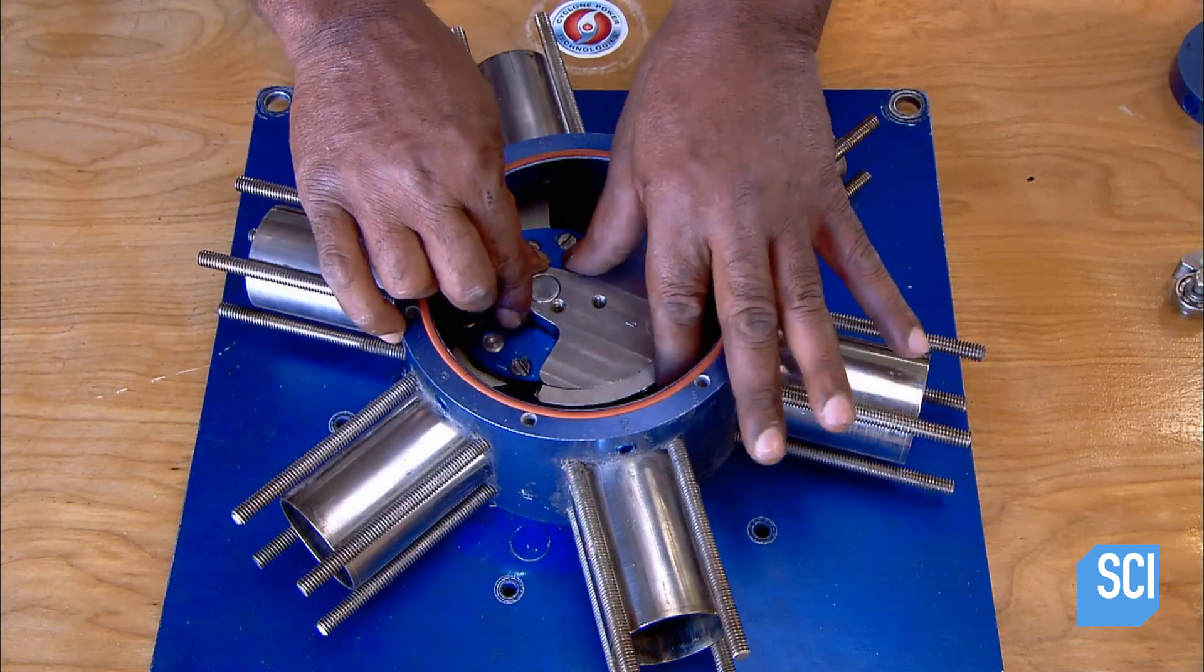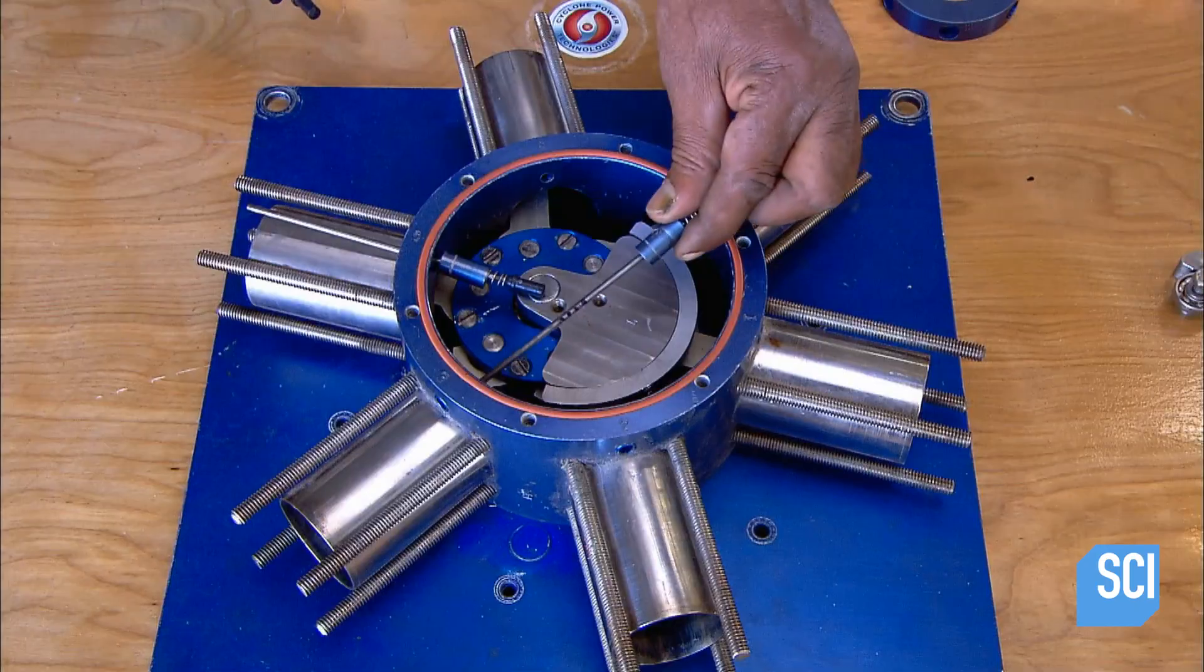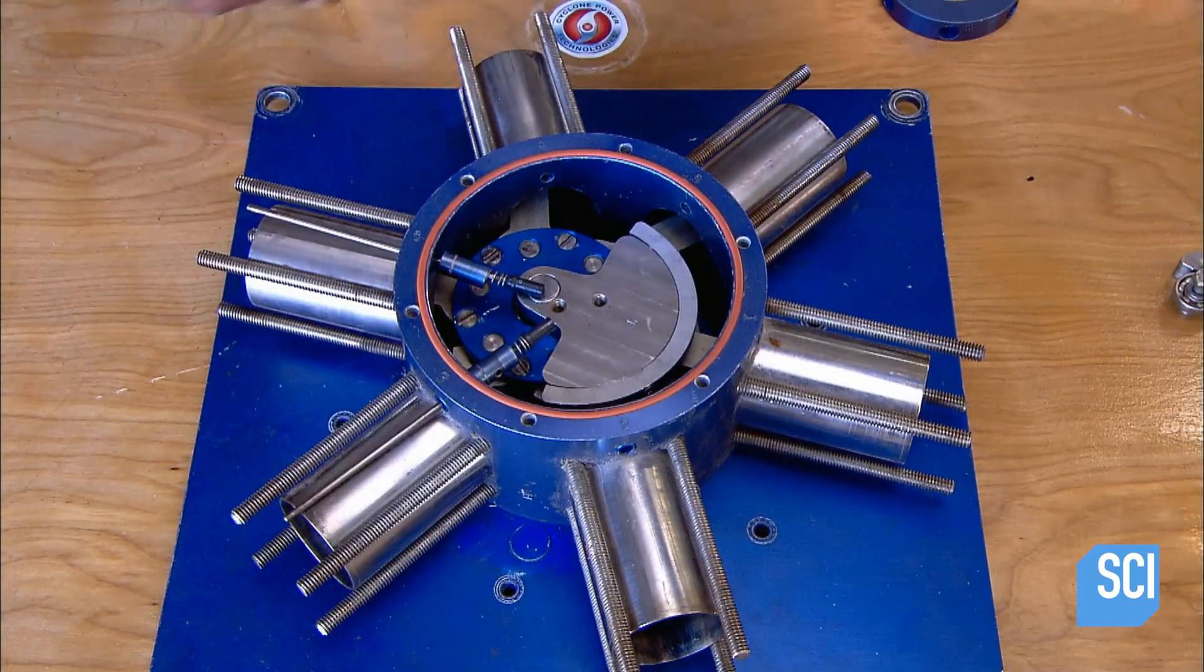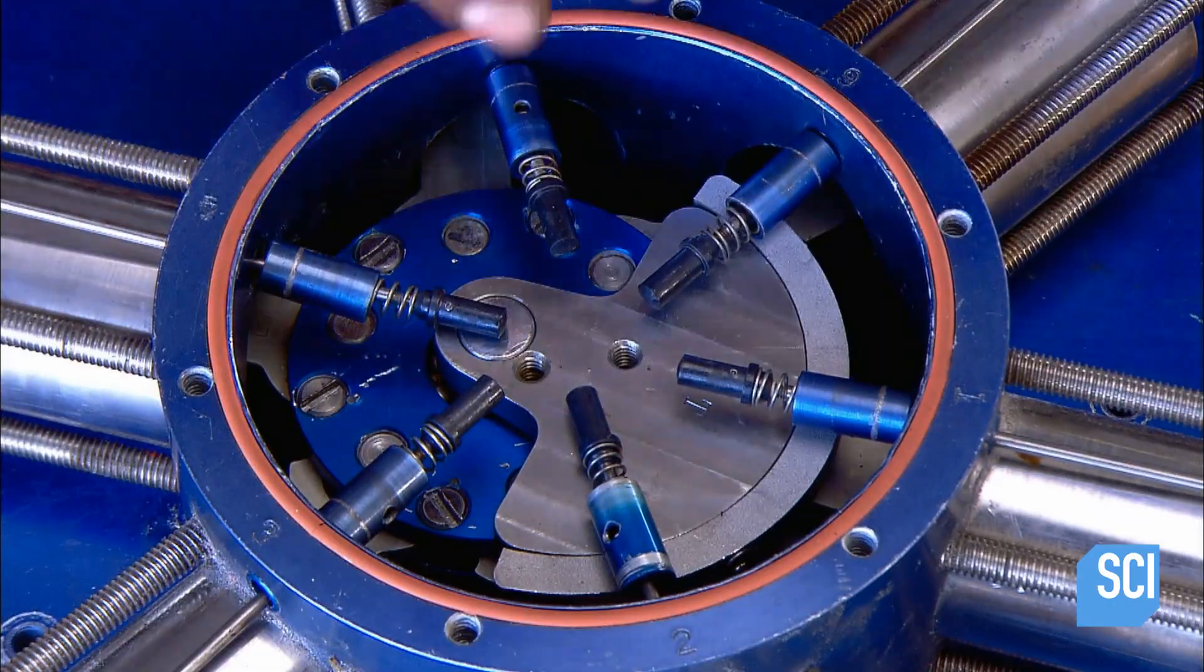They place a counterbalance over the spider bearing to further smooth the motion of the crankshaft. Now they install a push rod over each cylinder. It operates a valve which lets steam enter the cylinder and move the piston.